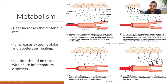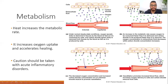When vasodilation occurs, blood flow increases in order to restore the equilibrium of gases in the tissue — more blood flow brings more oxygen back to the tissue. Those are the metabolic changes caused by heat.